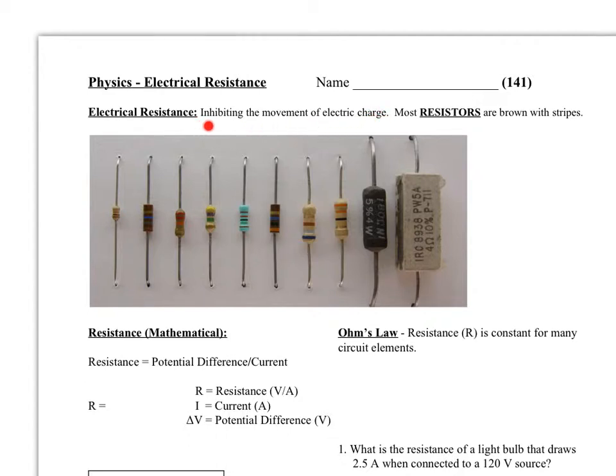Light bulbs are a type of resistor. There's all kinds of types of resistors. Light bulbs slow down or resist electrons as they move through or try to move through a light bulb, and it creates friction, heat, and light as a result.